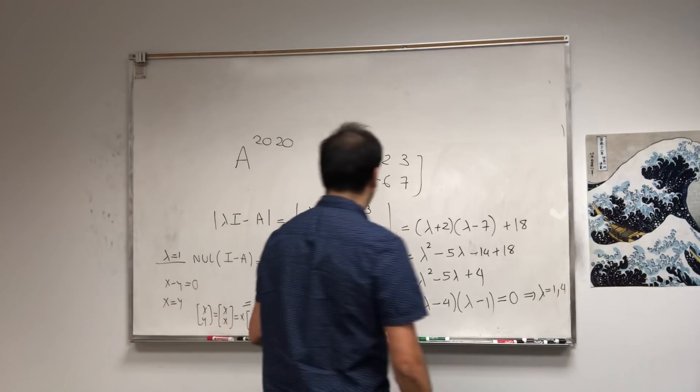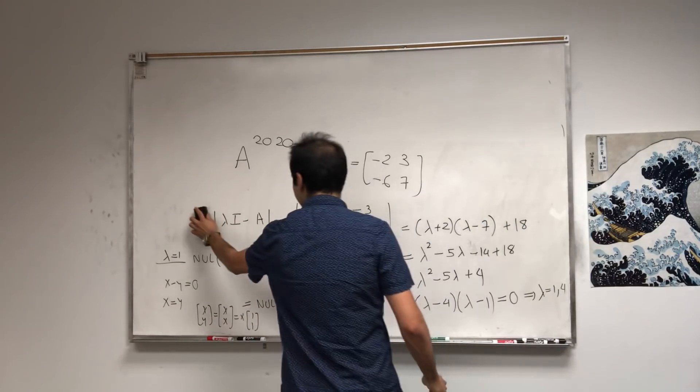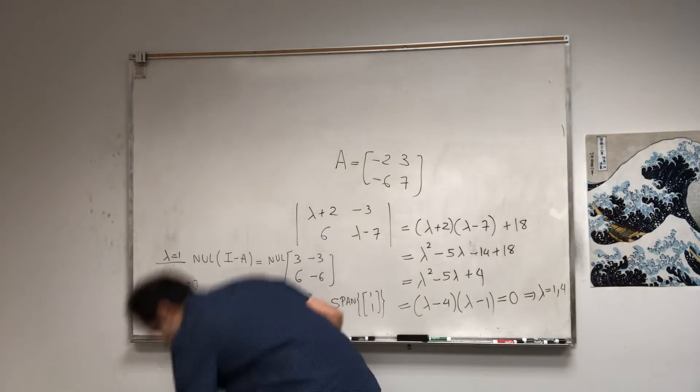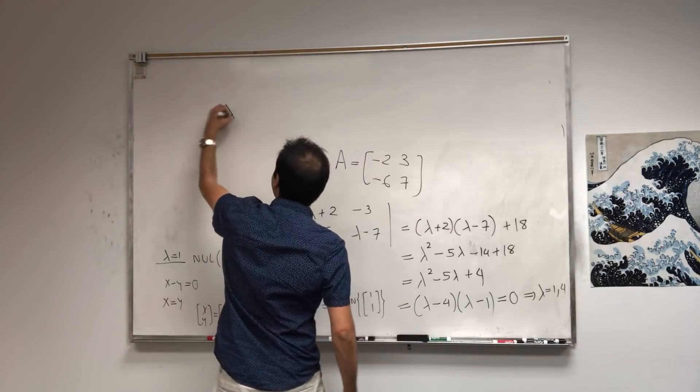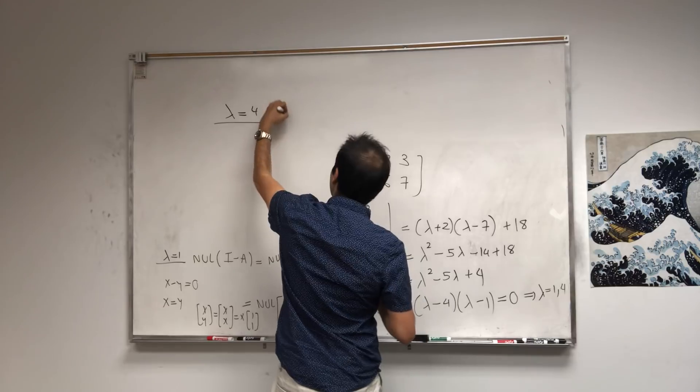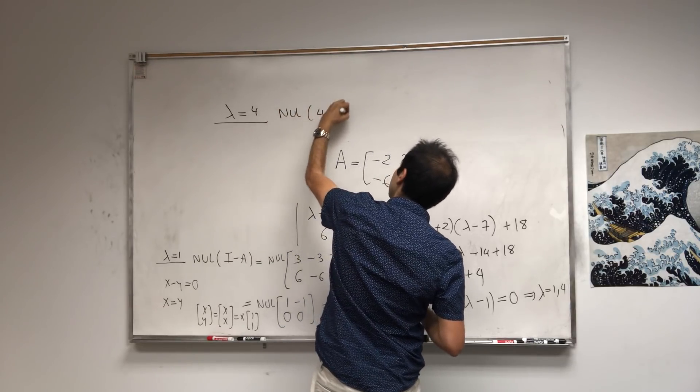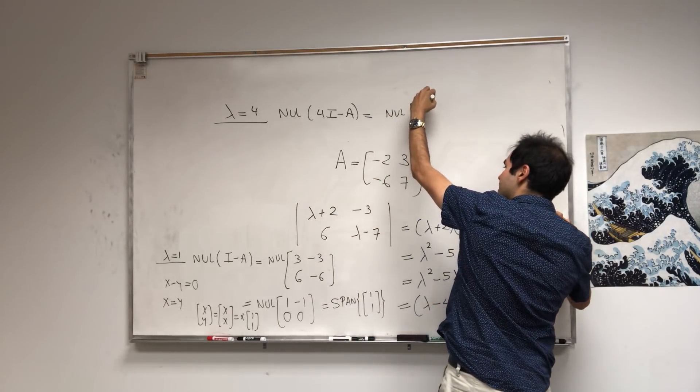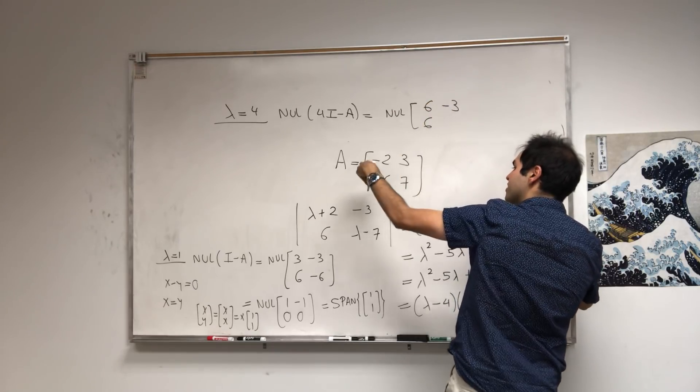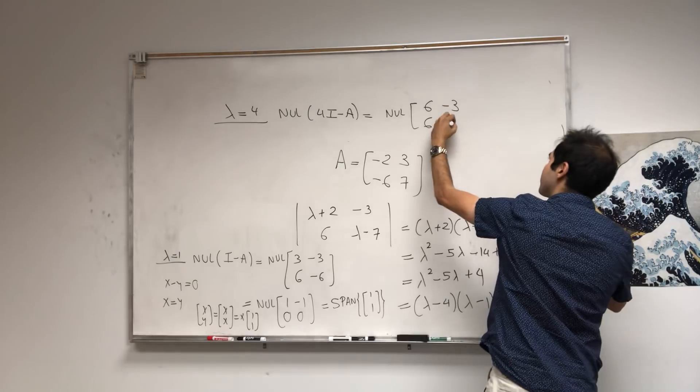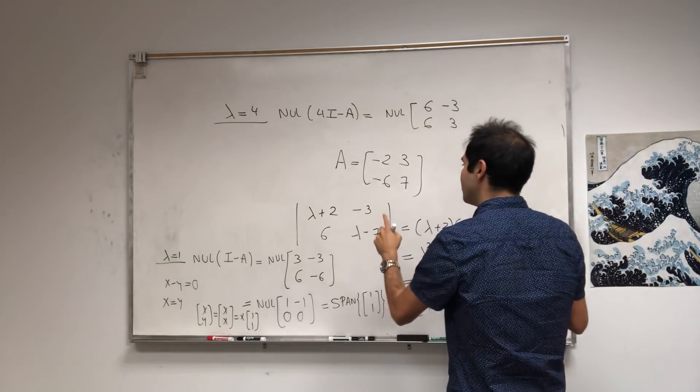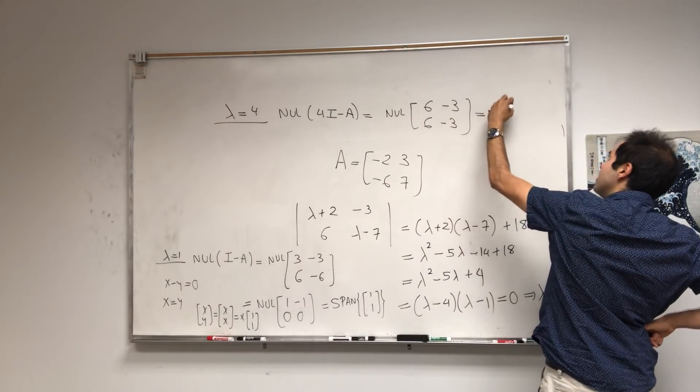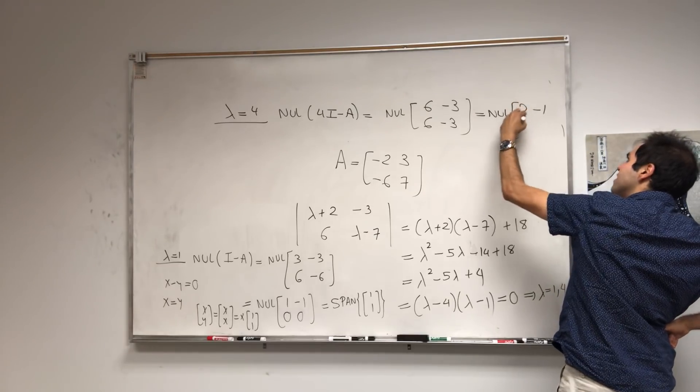Let's figure out the other one. For λ = 4, you do null space of 4I - A. That becomes the null space of [6, -3; 6, -3]. If you row reduce, you get null space of [2, -1; 0, 0].